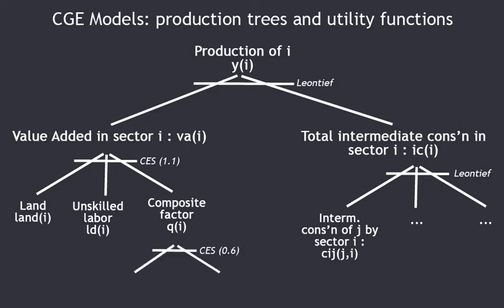The composite factor Q in sector i is a CES function with an elasticity of 0.6, which is relatively low, of skilled labor SKLD in sector i and capital KD in sector i. The elasticity of substitution between skilled labor and capital is relatively low, so they are rather complementary than substitutable. When we replace unskilled workers by machines, we are in fact substituting a composite factor — the combination of skilled labor and capital — for unskilled labor.